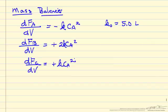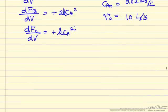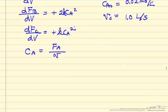We have the rate constant, which is 5 liters per mole per second. We have the inlet concentration, and we have the inlet volumetric flow rate. The first approach will assume that the volumetric flow rate doesn't change. To solve these we need to relate concentration to molar flow rate — the molar flow rate divided by the volumetric flow rate — where we assume V₀ does not change, so the volumetric flow rate is a constant.